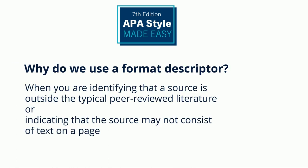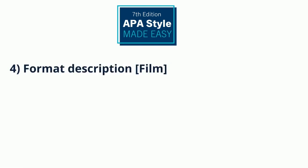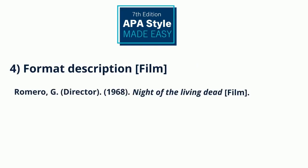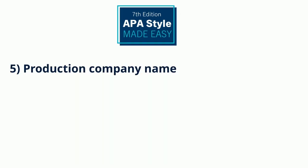After our title, we'll put a format description in square brackets. APA Style uses square brackets to describe the work you are citing for a few reasons: when you are identifying that a source is outside of the typical peer-reviewed literature, or indicating that the source may not consist of text on a page, you will describe the format inside of square brackets. In this case, we'll write out 'Film' after the title. The last step is adding the name of the production company that produced the film. If you are unsure of who the production company is, remember to check the film credits.